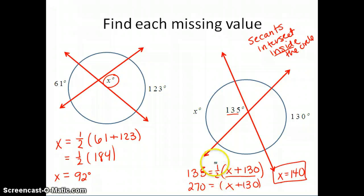So using my algebra, I multiply both sides by two to get rid of the one-half. Then I subtracted 130, and I found that the arc measurement of arc x is 140 degrees. Again, notice that in both of these cases, they're inside. They do not go through the center, so they are not central angles. They are just angles created by secants.